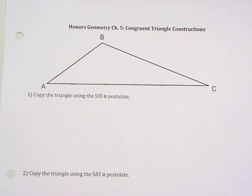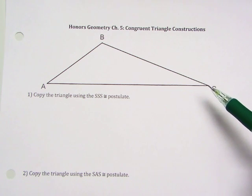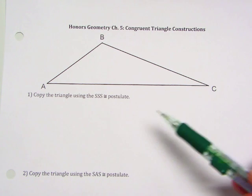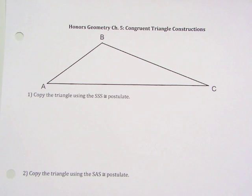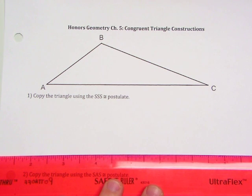All right, so we're recording. The first thing we want to do is construct a triangle congruent to triangle ABC using the side-side-side congruence postulate. The very first thing we're going to do is copy one of the sides. I'm just going to copy side AC first.